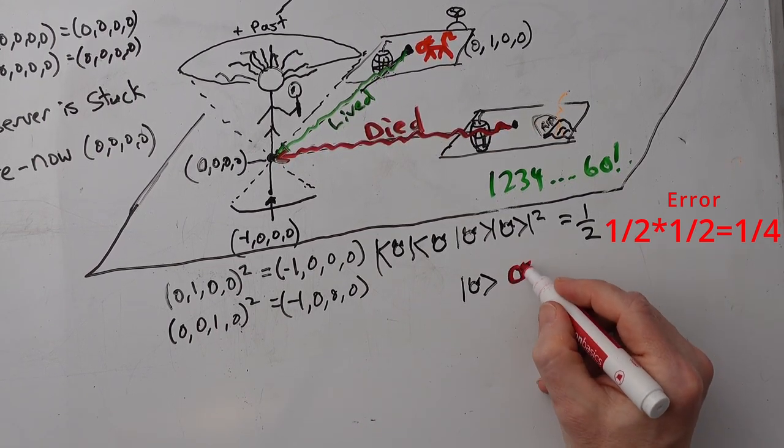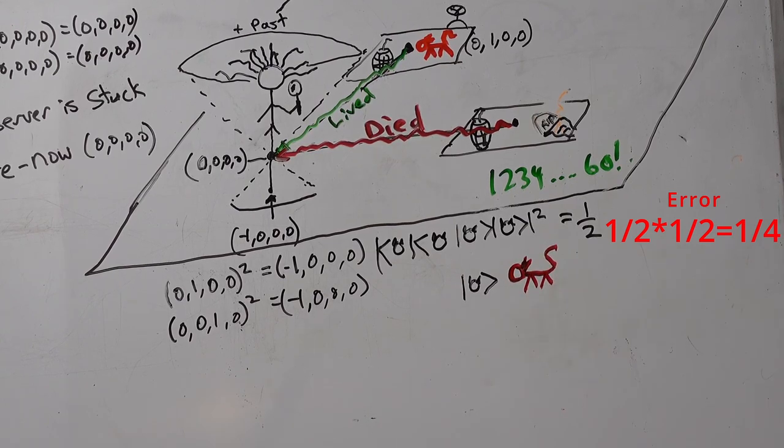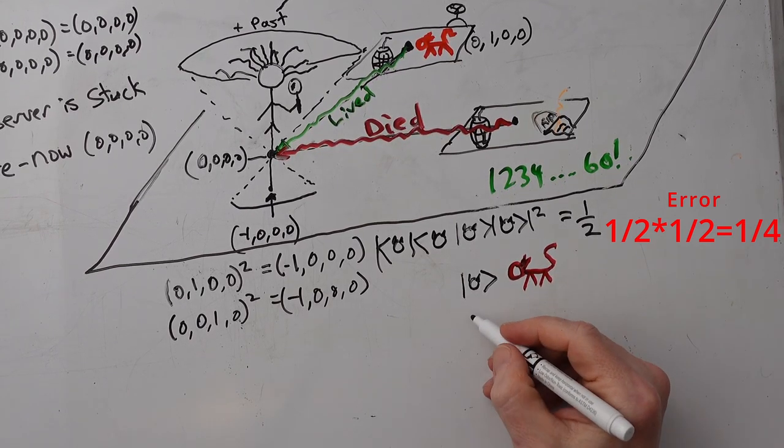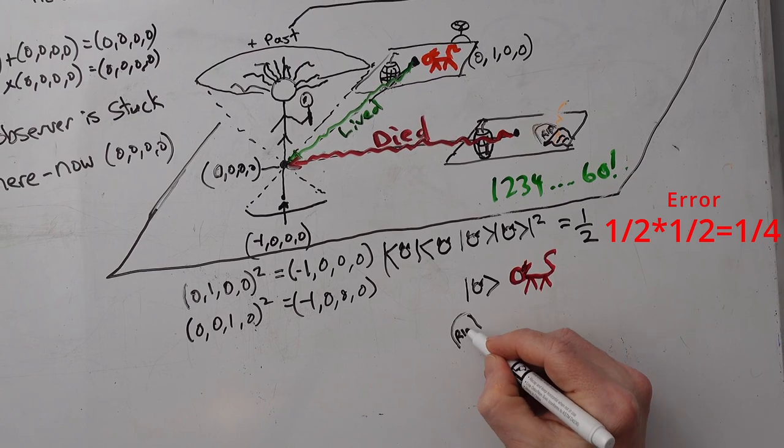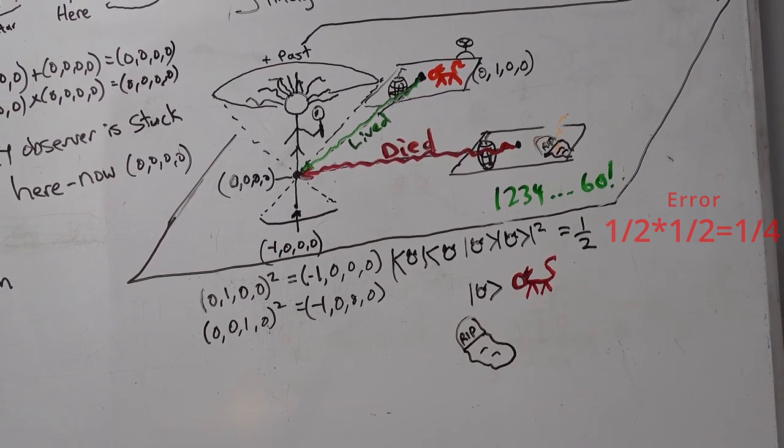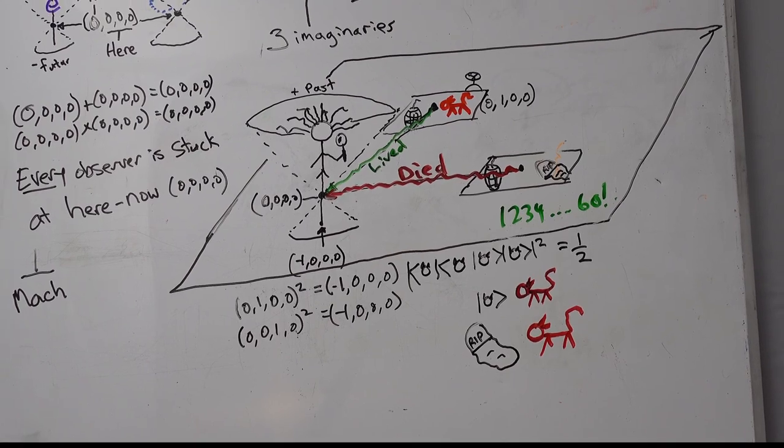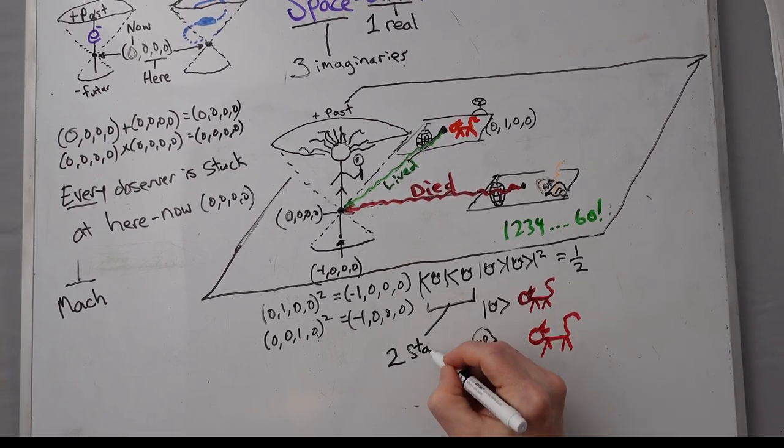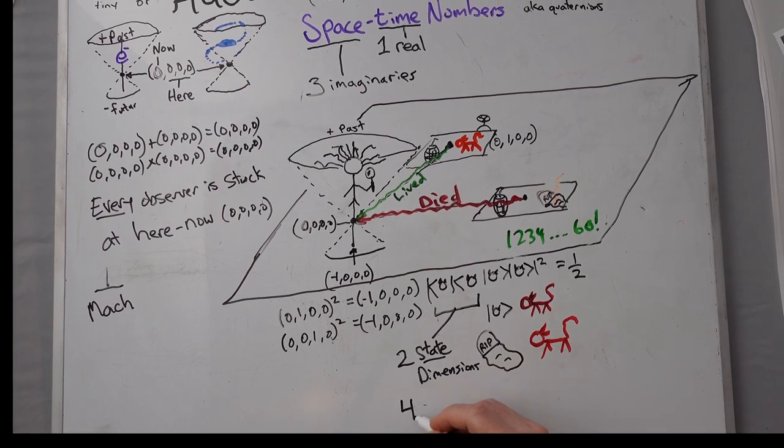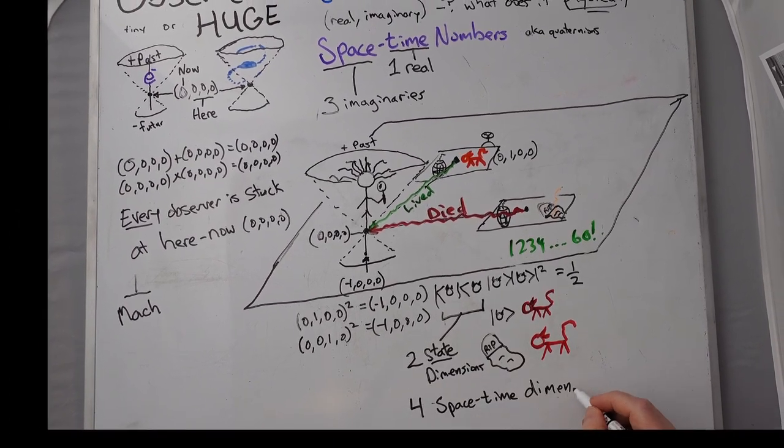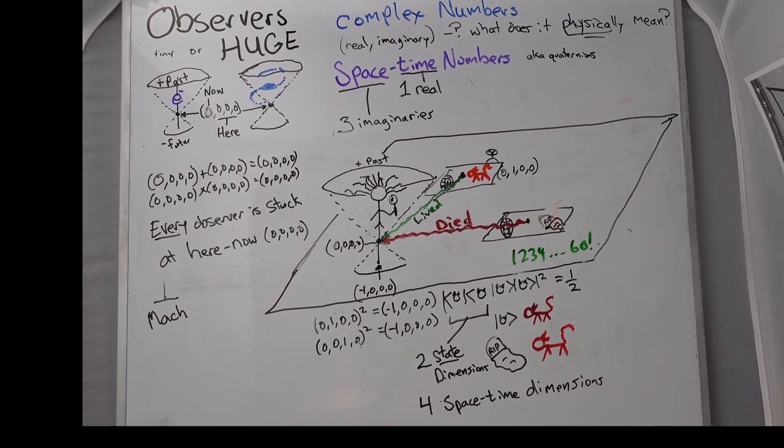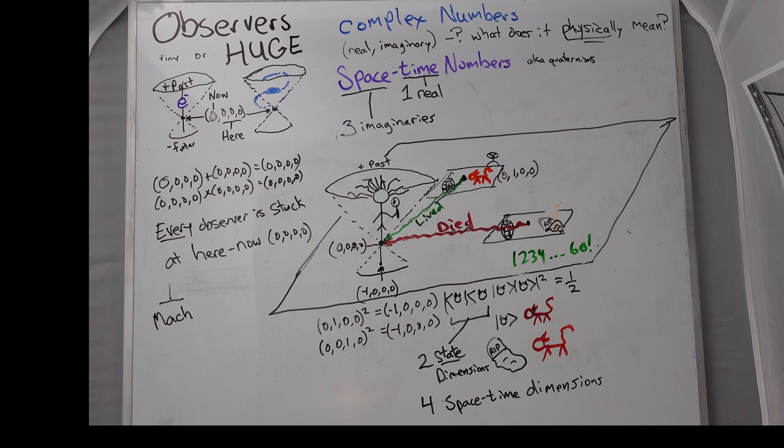So after Einstein knew one of them was red, lived, it would be that and the bracket notation. And then once we knew both pieces of information, well, we knew both pieces of information. So it's not a big deal. And what I like to say is that's two state dimensions versus four space-time dimensions. That's Schrodinger's gut.